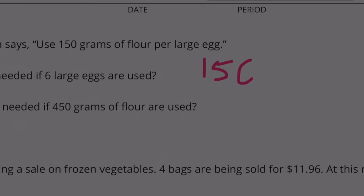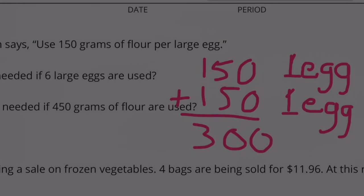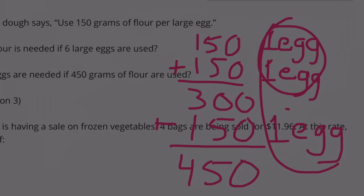How many eggs are needed if 450 grams of flour are used? 150 plus 150 is 300, and with 300 grams you would use 2 eggs. If we add 150 more grams of flour we end up with 450. Adding 150 more grams means we need to add 1 more egg. So 2 eggs plus 1 more egg gives us a total of 3 eggs.